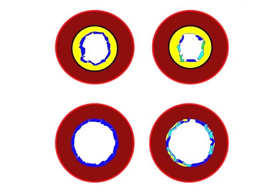They may have had a normal stress test because the stress test won't pick up a 50% narrowing. But because the plaque is vulnerable, because of endothelial dysfunction, the plaque can crack or fissure or clot and cause a full-thickness heart attack.